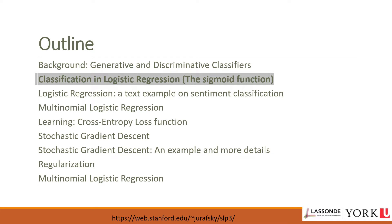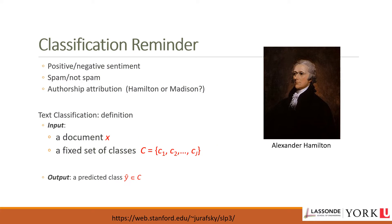We have now seen the high-level intuition of the components of logistic regression and its relationship to Naive Bayes. We will now see how to do classification with logistic regression and introduce the important sigmoid function. As a quick reminder, classification tasks include positive vs. negative sentiment or spam vs. not-spam emails.